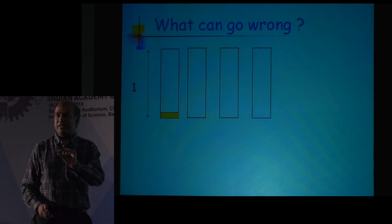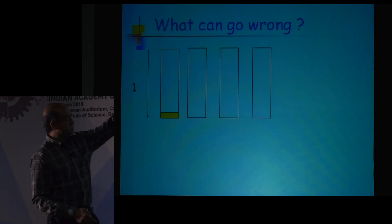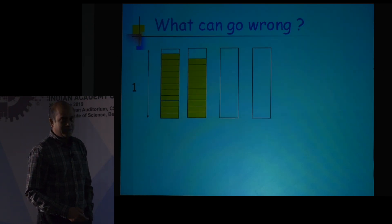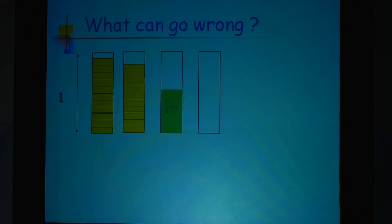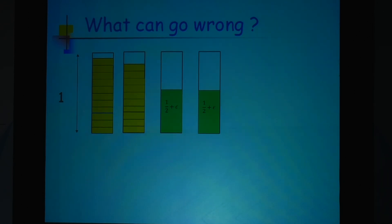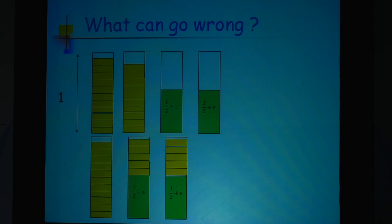A very simple example: initially a lot of very tiny items arrive, you pack them in the first two bins. Then two slightly large items arrive — slightly more than half the capacity, say half plus epsilon each. You have now used four bins, but somebody who knew the future would have packed them into three bins. So because you do not know the future, you incur a loss — the competitive ratio here is like 4 by 3.